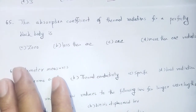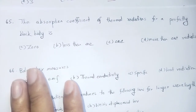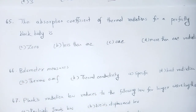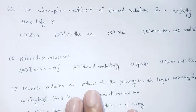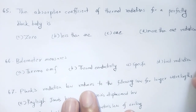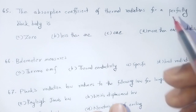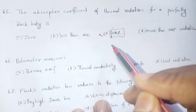Question 64: The absorption coefficient of thermal radiations for a perfectly black body. The absorption coefficient for a perfect black body will be 1. Option number C.